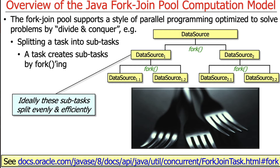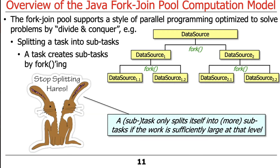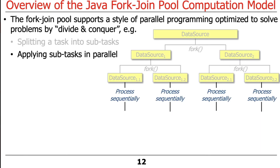This whole process is done recursively. You split the original data source into subtasks, then divide those into further subtasks, and keep going until you reach a level at which you choose not to subdivide any further — typically when the result is too small to split, such as when something gets to a size of one. Once you have split everything into atomic-sized elements, all those atomic-sized subtasks are processed in parallel as a unit, although any given subtask runs sequentially.